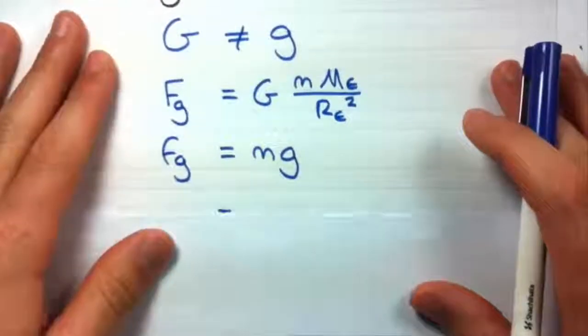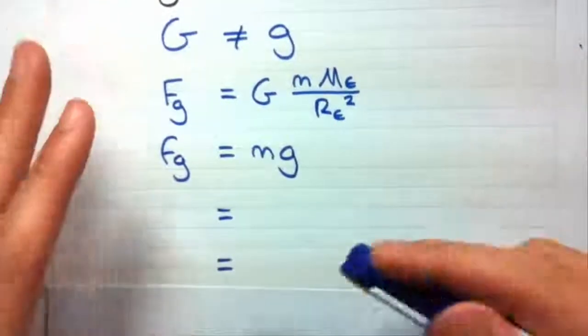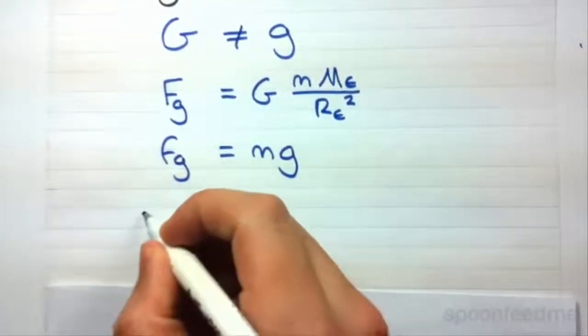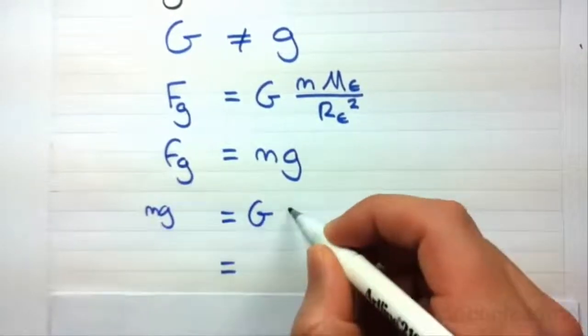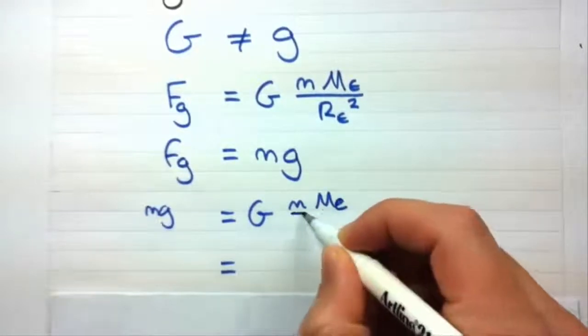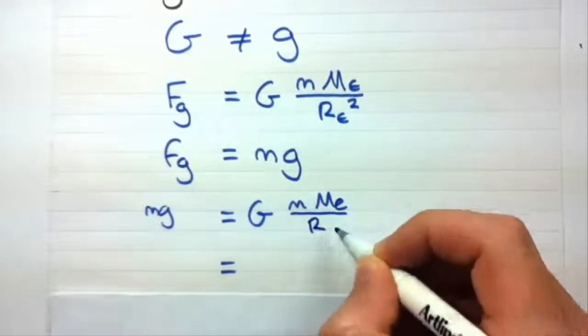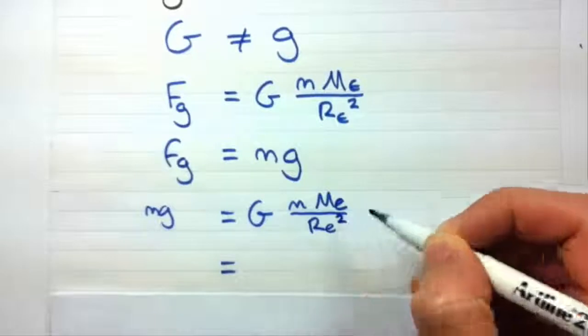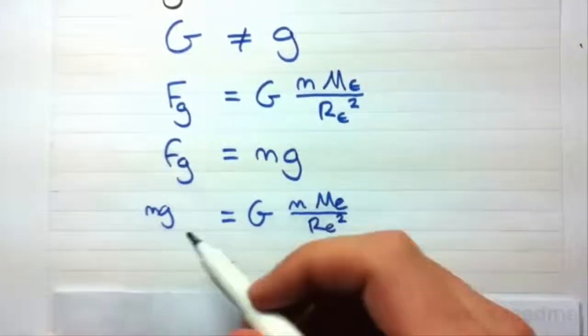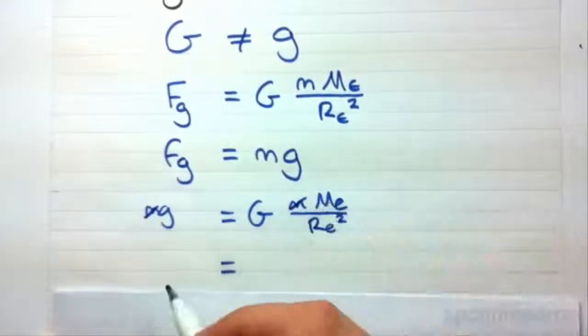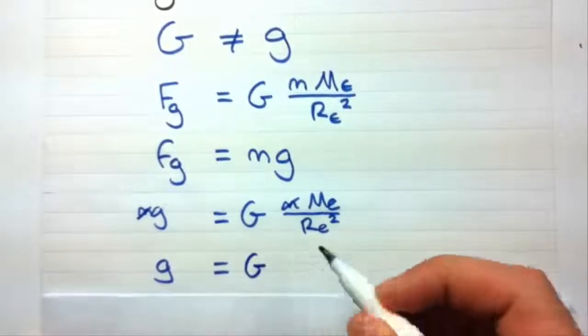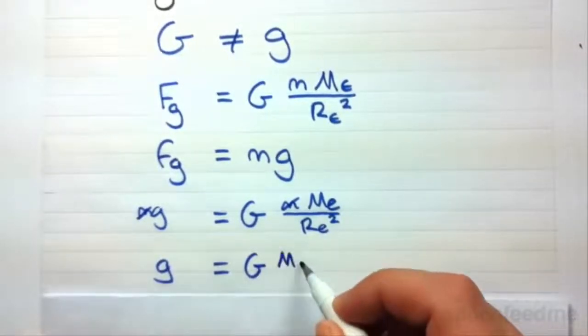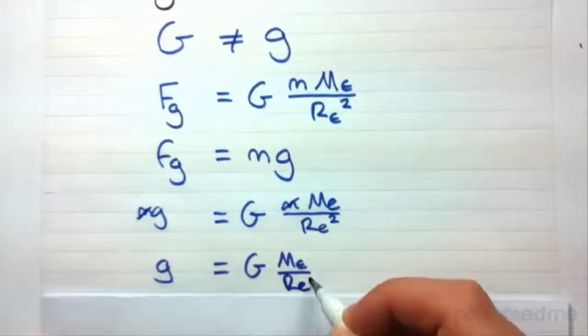Now, if we equate these two things we get Mg is equal to big G M mass of Earth all over radius of Earth squared. So we've got times M on both sides so we can get rid of that. And we end up with g is equal to G mass of Earth over radius of Earth squared.